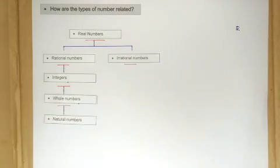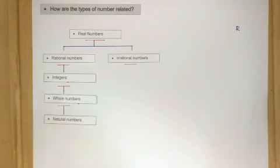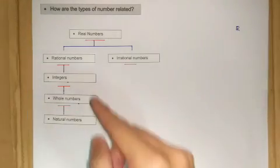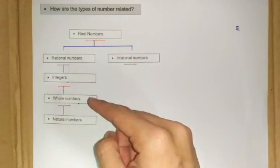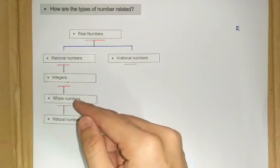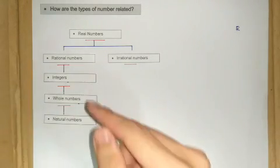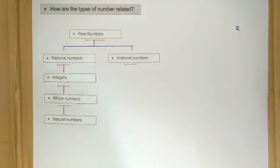I hope you can still recall the definition of the types of numbers here. In other words, we can say that all natural numbers are elements of whole numbers, and all whole numbers are elements of integers, but not all integers are whole numbers.